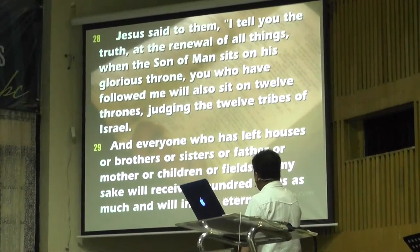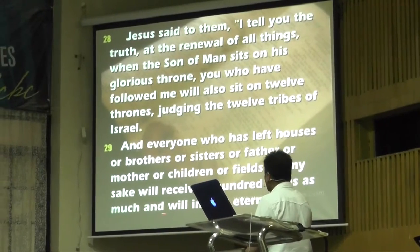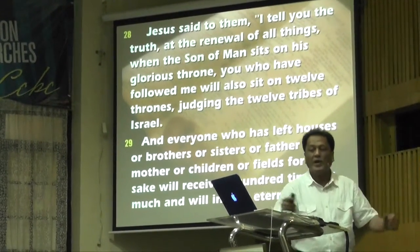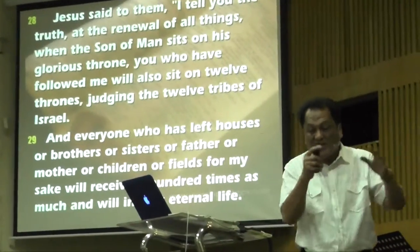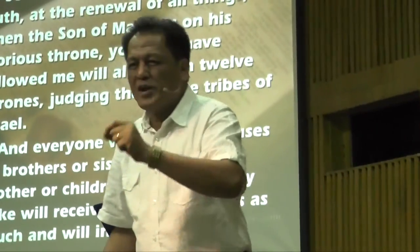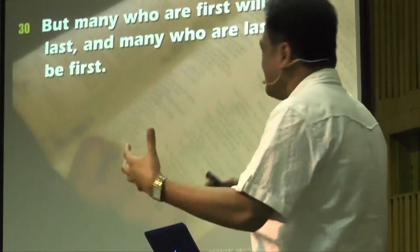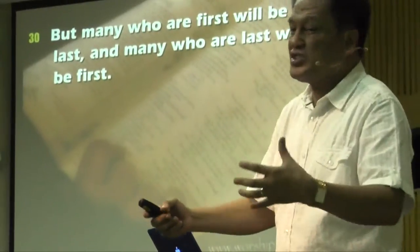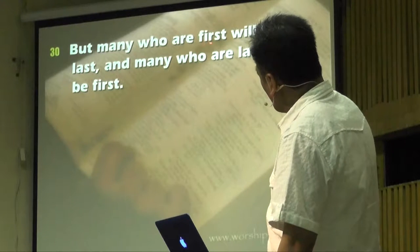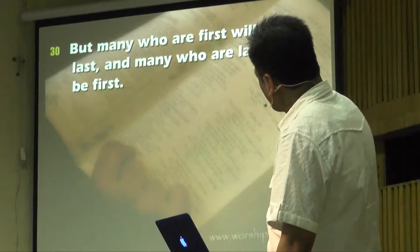Everyone who has left houses, brothers, sisters, children, father, mother, or fields for my sake will receive a hundred times as much and will inherit eternal life. But then the rewards will all be different. Look at verse 30: 'But many who are first will be last, and many who are last will be first.' That statement is what bothered the disciples.